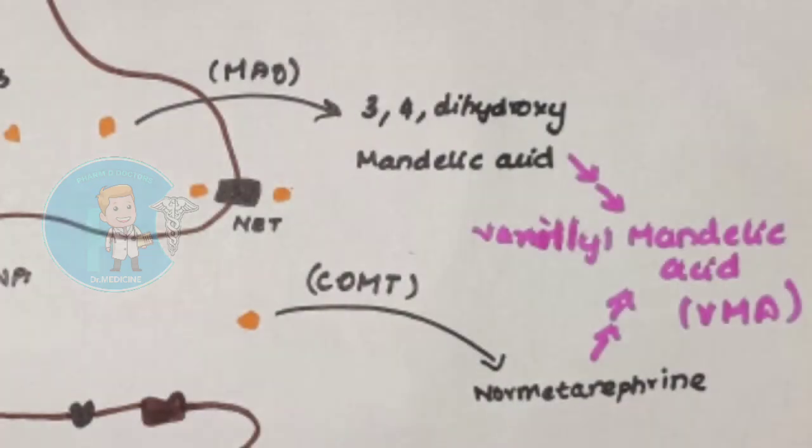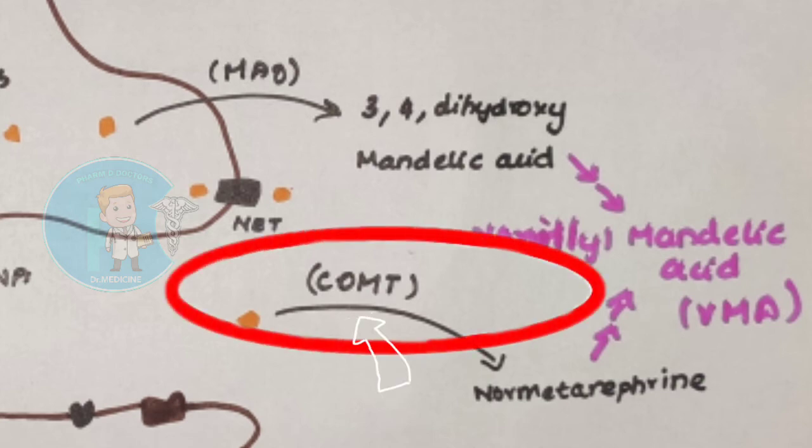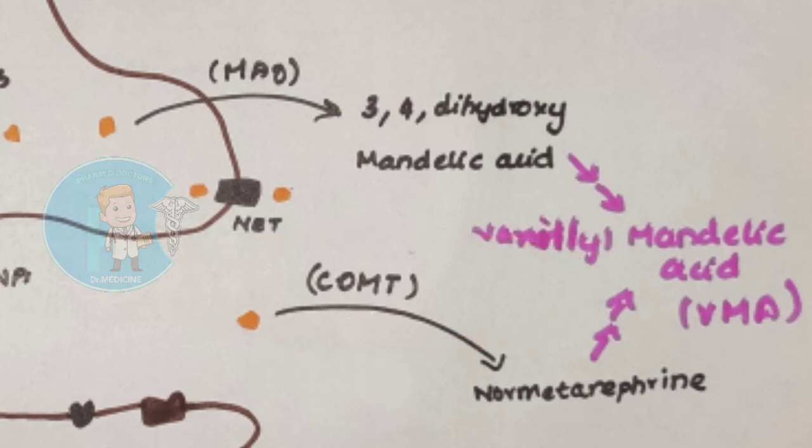In our body, there is an enzyme called Catechol-O-Methyl Transferase, that is COMT. The COMT inactivates noradrenaline and forms a metabolite called Normetanephrine. In the presynaptic vesicles, there is another enzyme, Monoamine Oxidase, that is MAO.